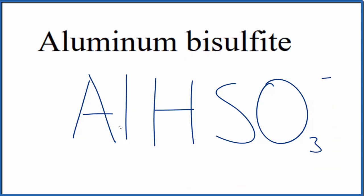So we have aluminum and our bisulfite ion. Aluminum, that's in group 13, sometimes called 3A on the periodic table, that has a 3 plus ionic charge.